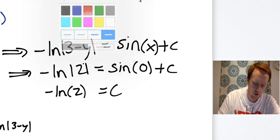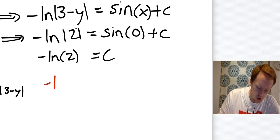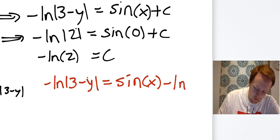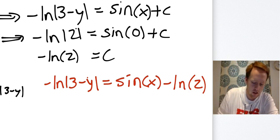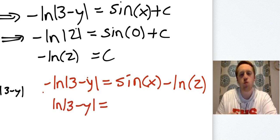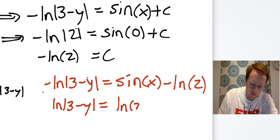Let me change colors because now we're on to probably the hardest part, which is actually solving for y. So we have -ln|3 - y| = sin(x) - ln(2). All right. First thing I'm going to do is I'm going to get rid of this negative sign that's right here on the left-hand side by going ln|3 - y| equals. I like to just swap them, but really I'm making the sine negative and the natural log of two positive. So like that.